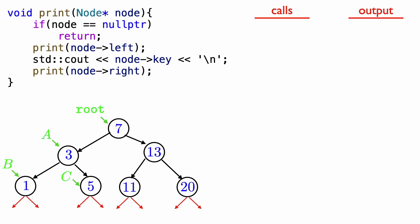Let's look at this with an example. I've given names to pointers to nodes in the left half of the tree here, so that we can talk about arguments to the calls of print. A points to the node with key value 3, B points to the node with key value 1, and C points to the node with key value 5. Initially, we call print with the root, so there's the call to print with the root.